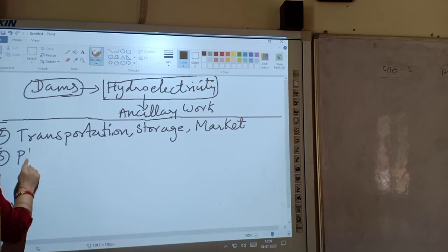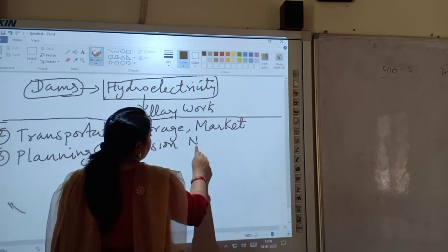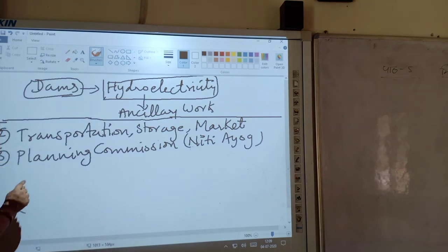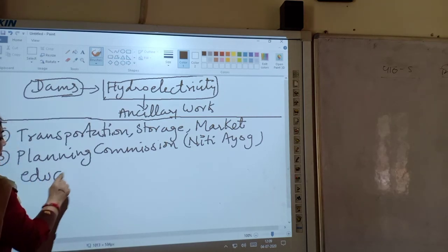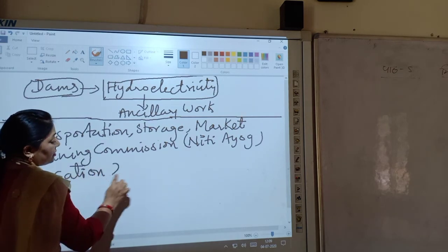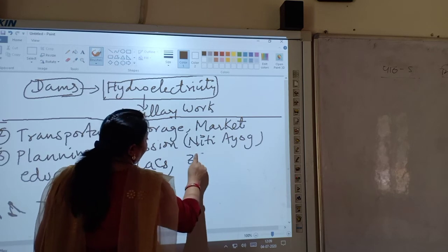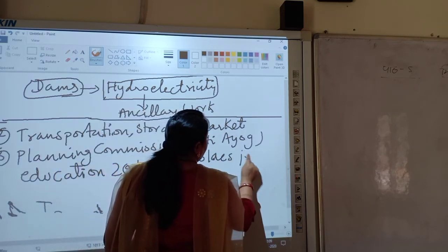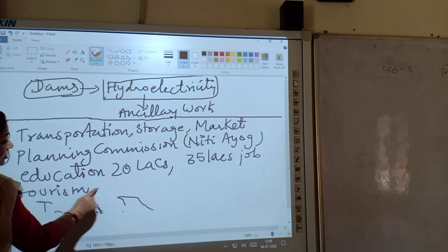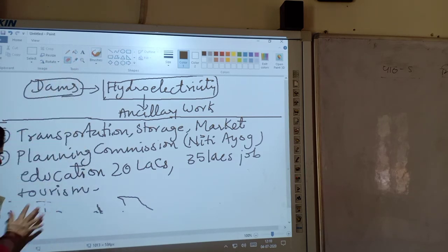According to the Planning Commission — now called NITI Aayog — NITI Aayog's estimates show that in the education sector, every year more than 20 lakh jobs can be created. And from the tourism sector, 35 lakh jobs can be created. The government can boost the tourism sector, and apart from that, the government has also said that semi-urban and urban areas can be developed.